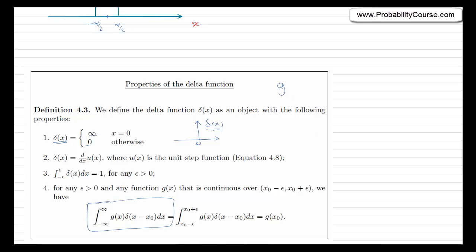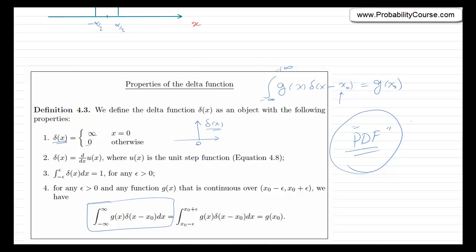If you have any continuous function g of x and you multiply it by a shifted delta function — where x0 could be any value — and integrate from minus infinity to plus infinity, the result is g of x0. Now, in this video, we're going to use these properties to introduce PDF, or more precisely, generalized PDF for mixed and discrete random variables. We already know the PDF for continuous random variables, and we want to make the concept of PDF general so it is applicable to any random variable.